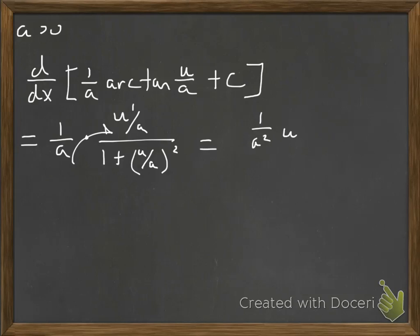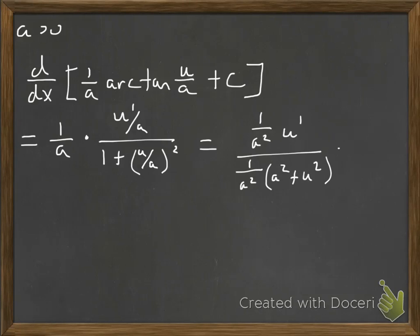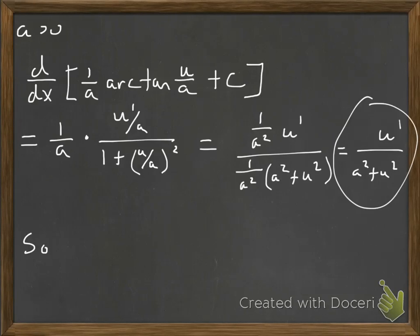We'll put the 1 over A together with the other 1 over A, giving us 1 over A squared times U prime upstairs. Then we factor out 1 over A squared in the denominator to get A squared plus U squared. The 1 over A squared cancels, leaving us with U prime over (A squared plus U squared). This is the form we're looking for. If we can match it, the antiderivative is 1 over A times arc tan of U over A plus C.